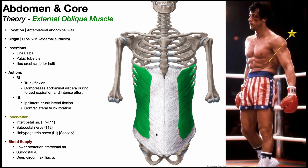An aponeurosis is basically a tendon, but a very broad one. Usually the term tendon refers to something thin like a rope, whereas these broad tendons with a broad origin or insertion are called aponeuroses. The external oblique inserts on the linea alba, which divides the halves of the rectus abdominis and runs from the xiphoid process down to the pubic symphysis. Part of the insertion also goes to the pubic tubercle, which flanks the pubic symphysis on either side, and then the anterior half of the iliac crest.